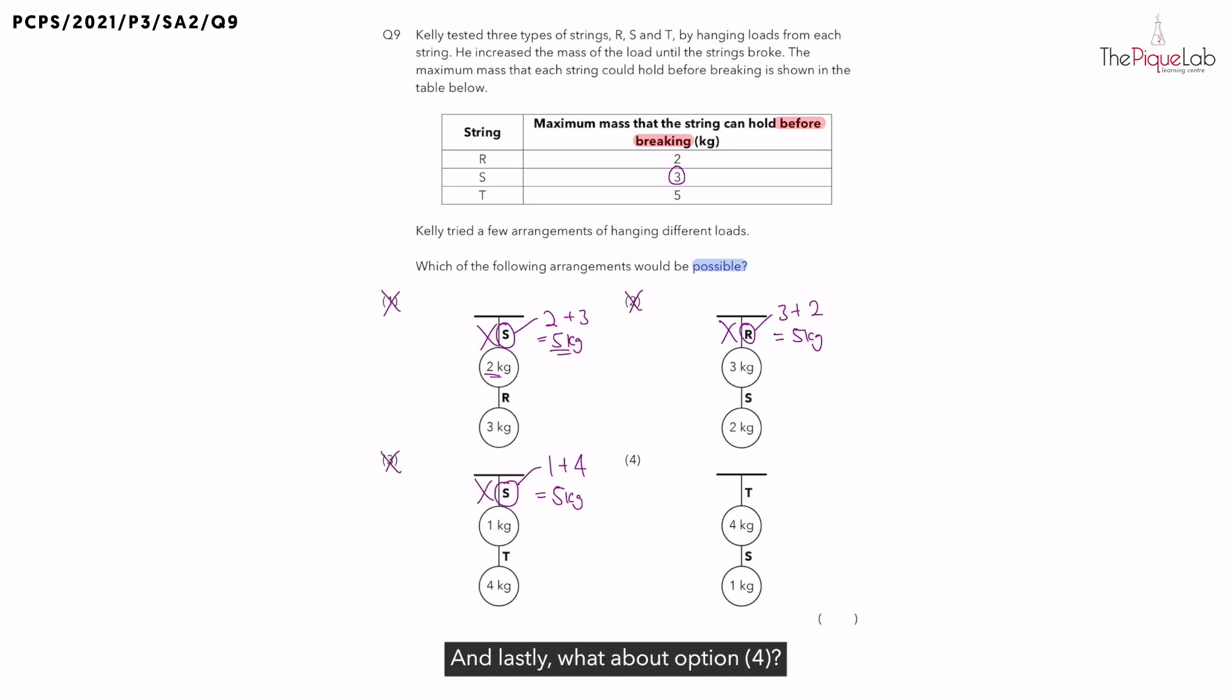Lastly, what about option 4? This time we are looking at T. Similar to the other options, let's calculate what's the mass that T has to support. We know that T has to support a mass of 4kg plus 1kg, and we get 5kg. Now let's check back to the table. Can string T support a maximum mass of 5kg before breaking? Definitely. So this one is possible.